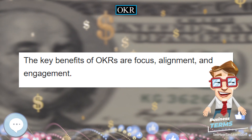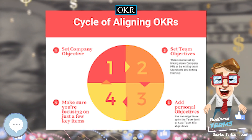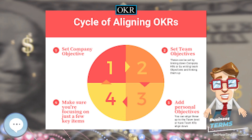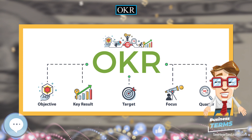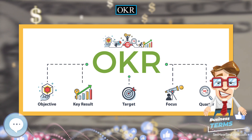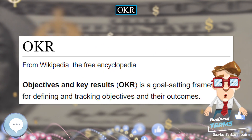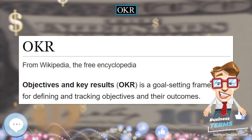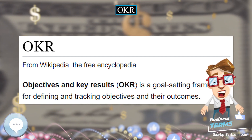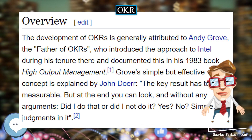Since becoming popular at Google, OKRs have found favor with several other similar tech startup organizations including LinkedIn, Twitter, GE, and Uber. OKRs may be shared across the organization with the intention of providing teams with visibility of goals in order to align and focus effort.